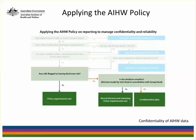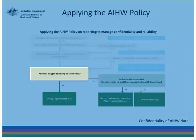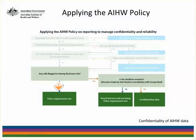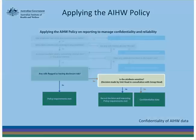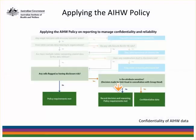Now that we have finished our examination of the table, we ask whether any cells have been flagged as having a disclosure risk. If not, then the policy requirements have been met and the table is ready for release. If there are flagged cells, the final question is whether the attribute is sensitive or not. An example of a sensitive attribute would be disability status, and a non-sensitive attribute would be state of usual residence. If the attribute is not sensitive, the policy requirements have been met and the data can be released. If the attributes are sensitive, then we move on to confidentialise the data.